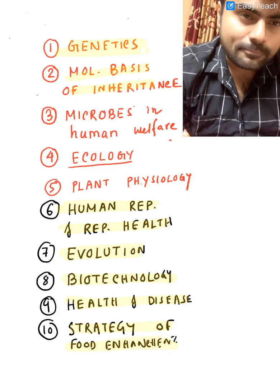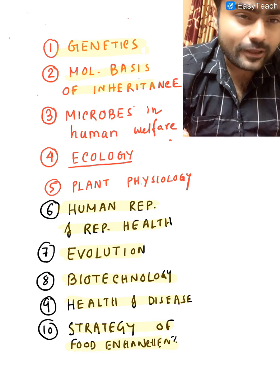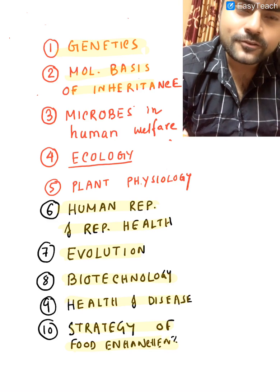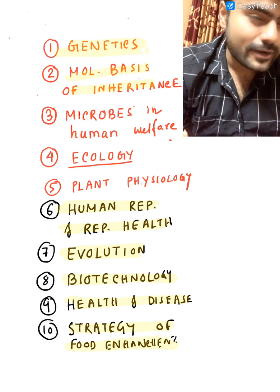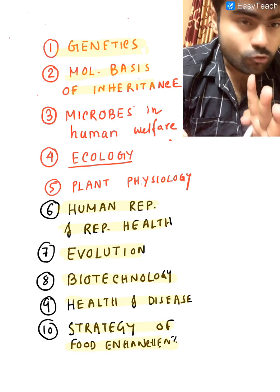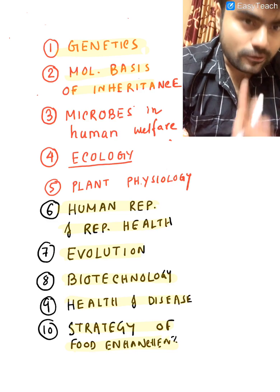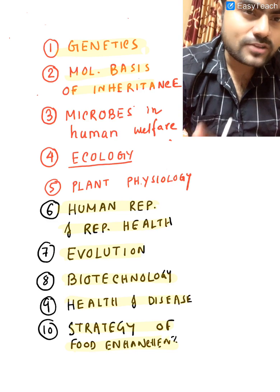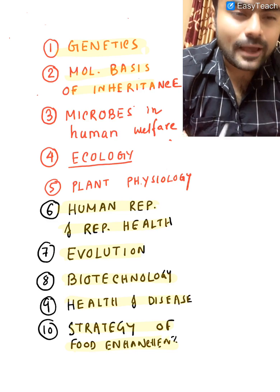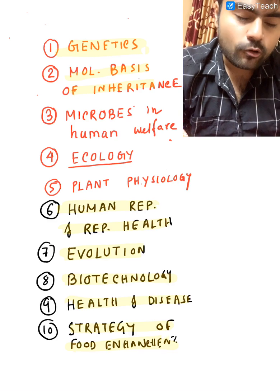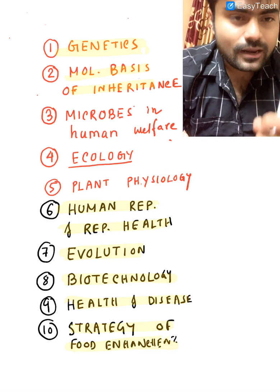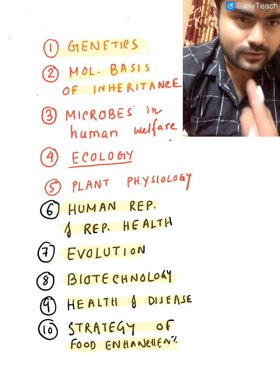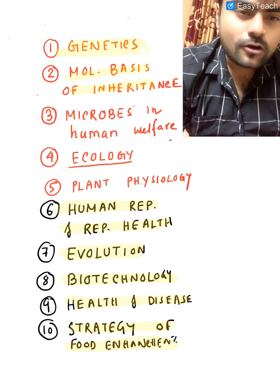The third chapter you have to know in detail — every line is important. Two straight questions will come in the exam, and it will be an easy one. If you miss one line from this chapter, you can miss that question. That chapter is microbes in human welfare. Every line, every word, everything is important in this chapter.